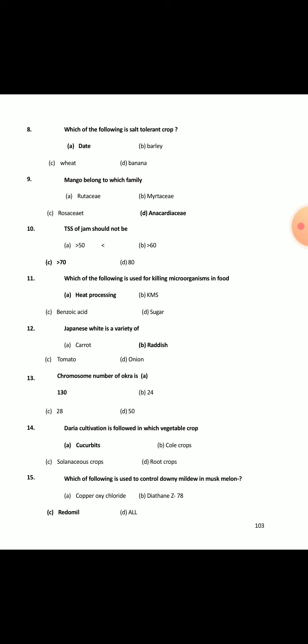In dira cultivation, we grow the crop on the banks of a river. Which of the following is used to control downy mildew in muskmelon?